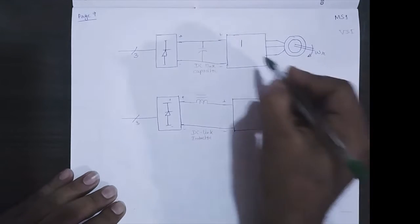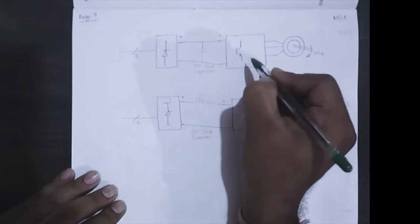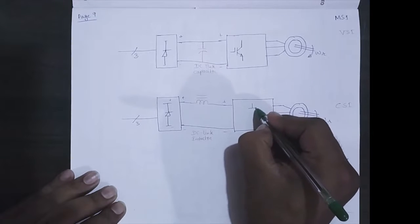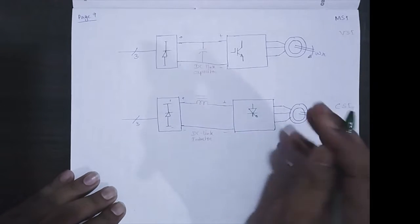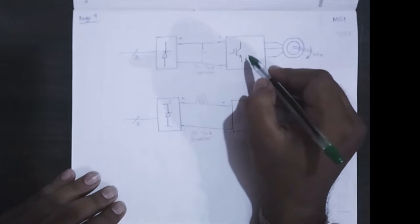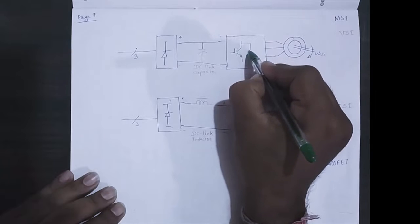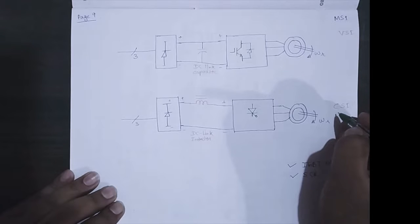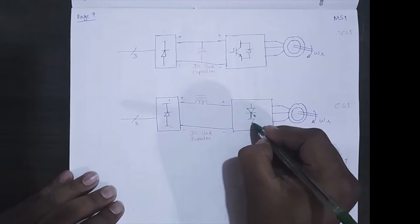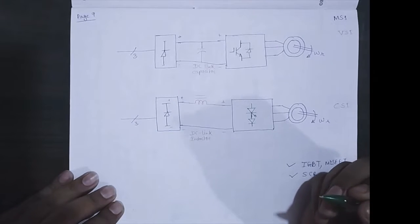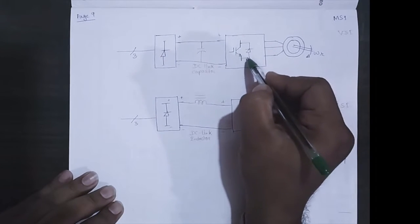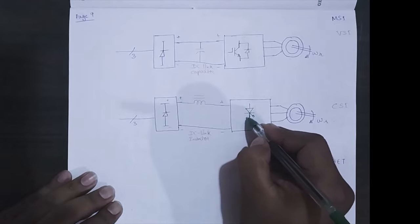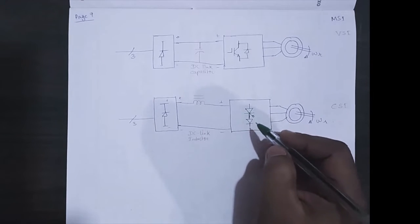In VSI case we use an IGBT or MOSFET. In CSI we use a thyristor. In VSI, this MOSFET is connected with an anti-parallel diode, but in CSI this thyristor is connected with a series connected diode. This should be kept in mind: in VSI it is an anti-parallel diode, and in case of CSI it is a series connected diode.